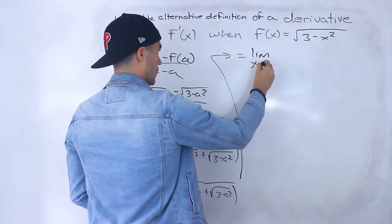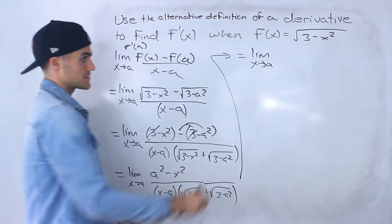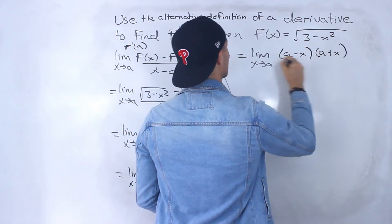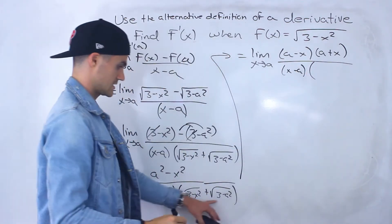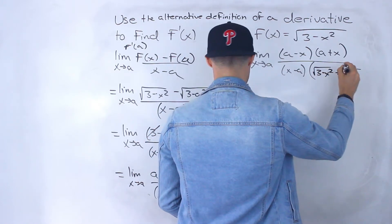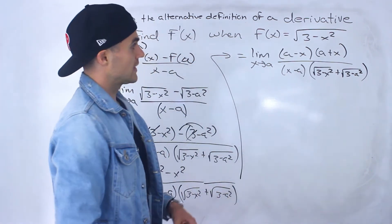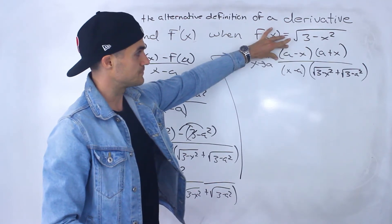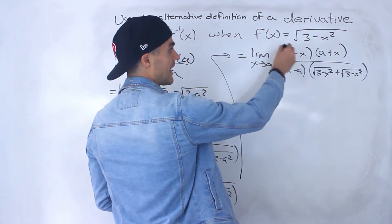Notice that the numerator is a difference of squares, so it factors into a minus x times a plus x. We're still dividing by x minus a times the square root of 3 minus x squared plus the square root of 3 minus a squared. We're getting close to canceling that x minus a factor — we have a minus x, but it's not quite the same yet.